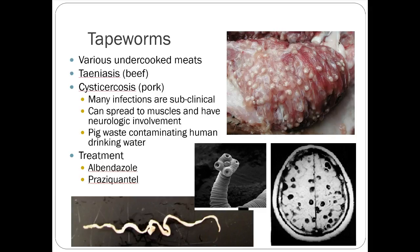Tapeworms are seen in undercooked meat — different types for beef and pork. Most infections aren't clinically apparent, but if they spread to muscles they can build up in muscle mass and potentially cause neurologic involvement. Albendazole and praziquantel are both drugs that can be used for tapeworm infections.